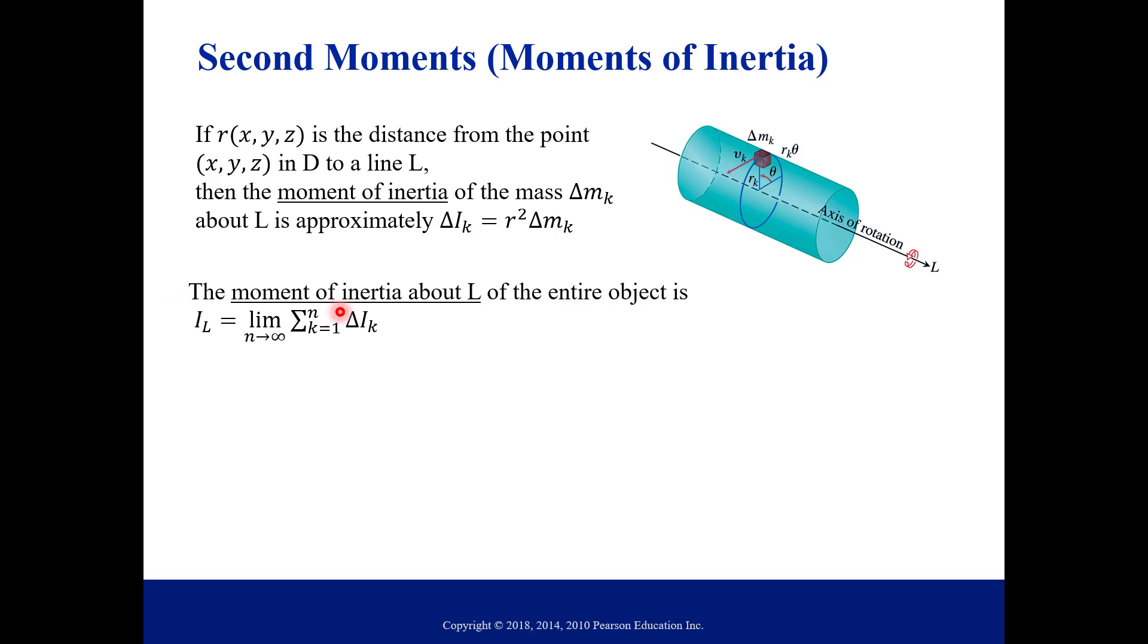So the moment of inertia about L of the entire object is denoted I sub L. And notice what we have here, it's going to be the summation of all of these delta I sub K's, all these individual moments of inertia, for these little individual mass elements in our region. And so if we take the limit, so first of all the sum of all those, and then the limit as those go to infinity, the amount of those little mass elements goes to infinity.